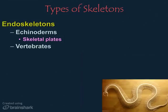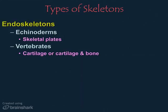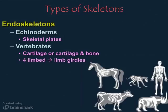Vertebrates, or animals with a vertebral column or backbone, have endoskeletons. These can be made up entirely of cartilage, as in sharks, or mostly bone with cartilage present in certain areas, as in most other vertebrates like the snake shown here.